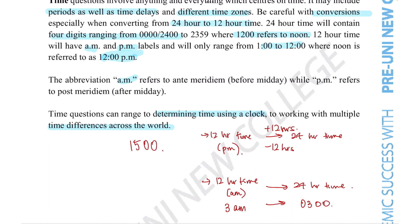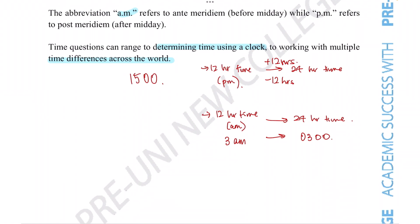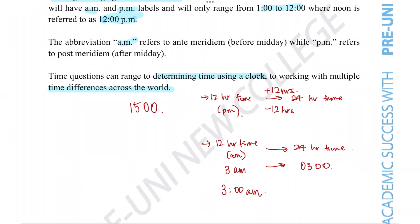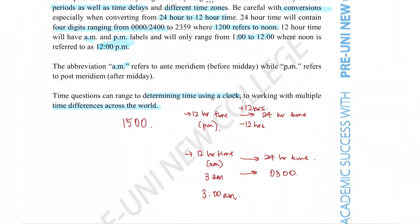24-hour time also usually doesn't have the colon separator that we use in 12-hour time, where we would represent it as 3:00 AM. That's just a writing convention, so try to include that whenever you're using these formats.